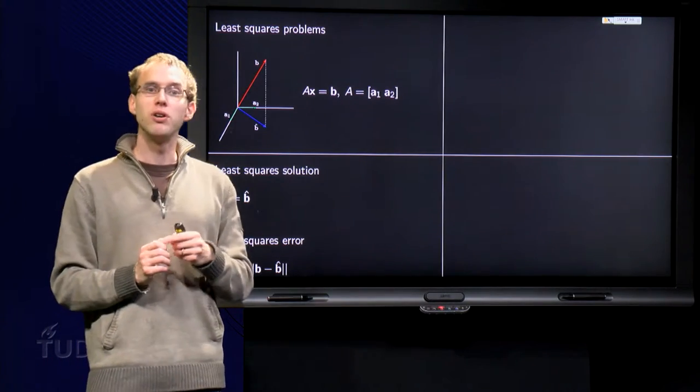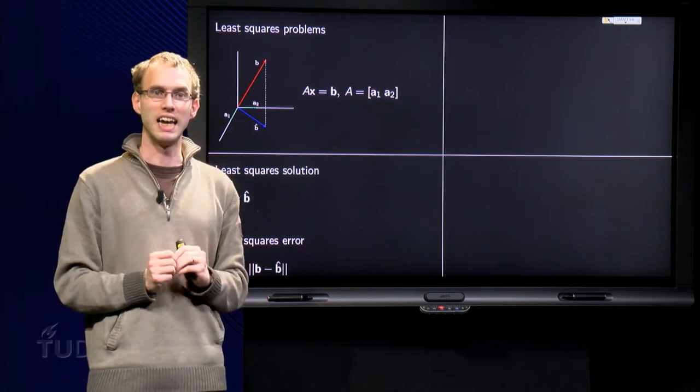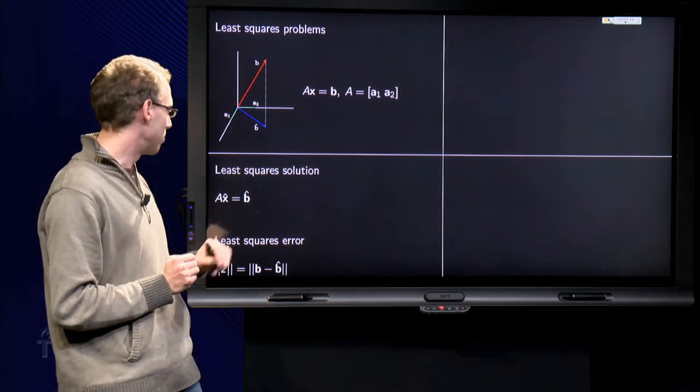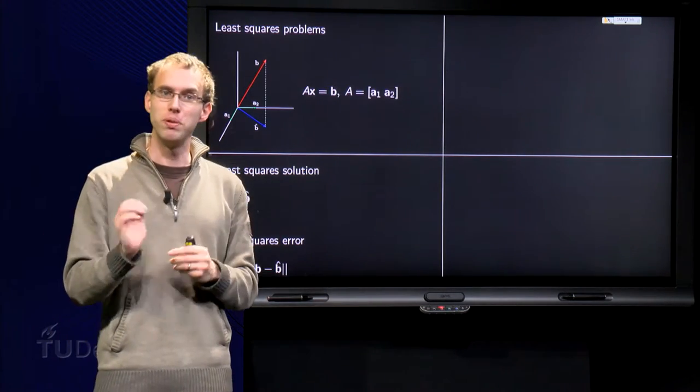The solution of that new system will be called our least squares solution x̂. So we change our system AX = b into the new system Ax̂ = b̂.